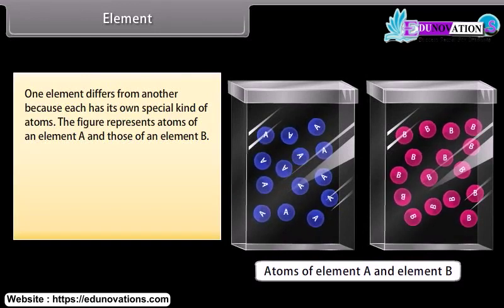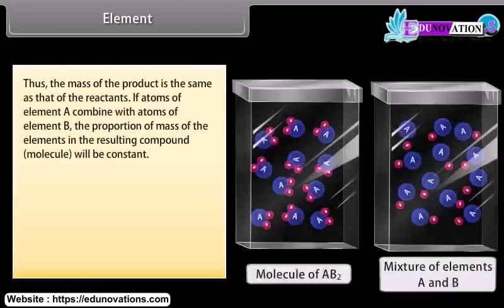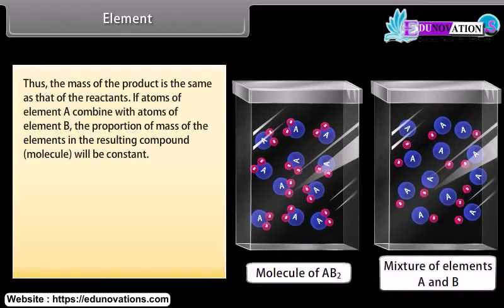The figure represents atoms of an element A and those of an element B. An element cannot be broken down into a simpler substance because its atoms are indivisible. When two elements combine, atoms are neither created nor destroyed. Thus, the mass of the product is the same as that of the reactants. If atoms of element A combine with atoms of element B, the proportion of mass of the elements in the resulting compound molecule will be constant.